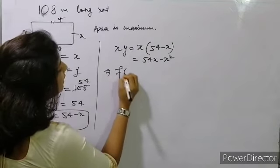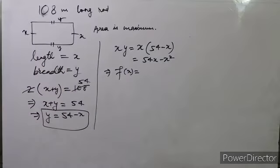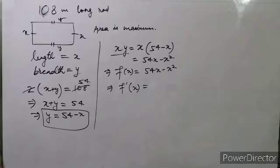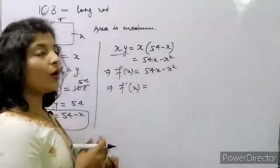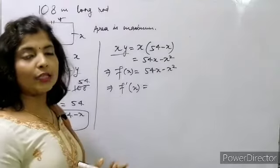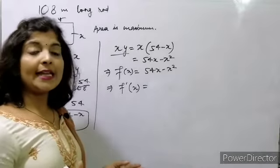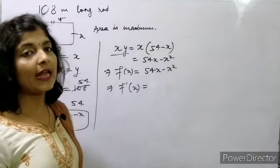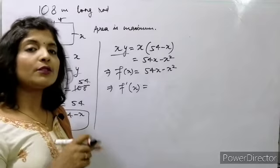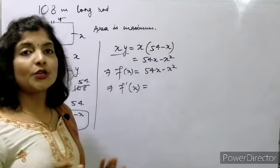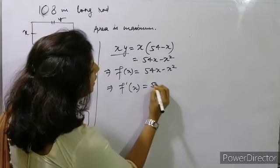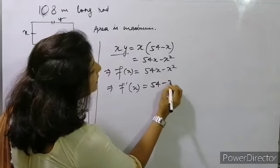We take f(x) = 54x - x² because the area is given to be maximum. Area is length × breadth and it is given that area is maximum, so this is the function we work with. For maximum, f'(x) should equal 0. f'(x) = 54 - 2x.